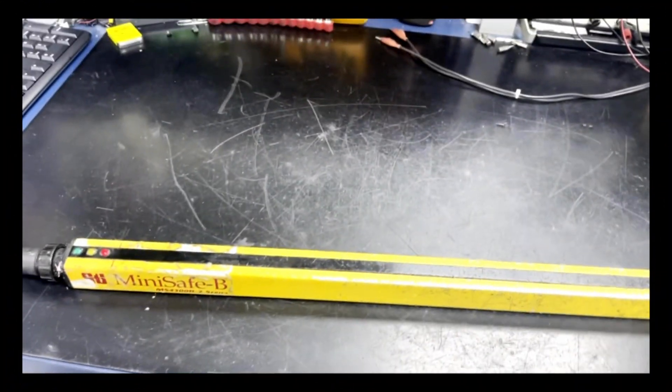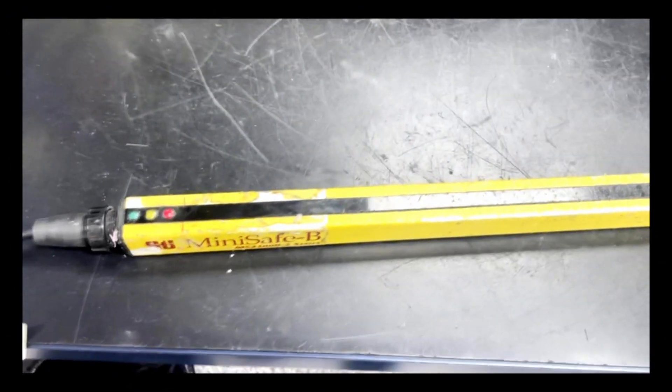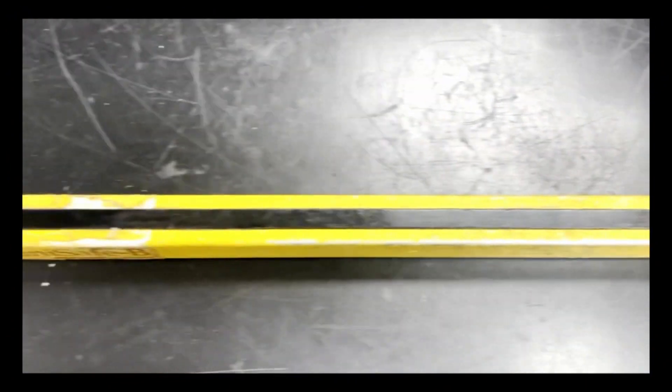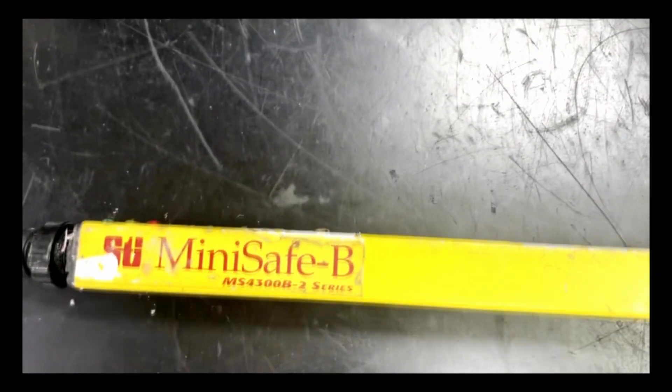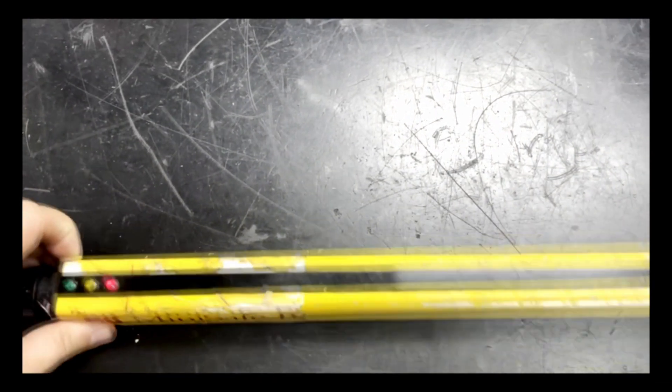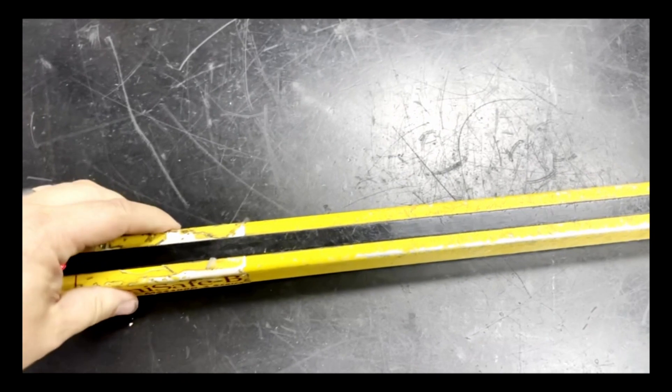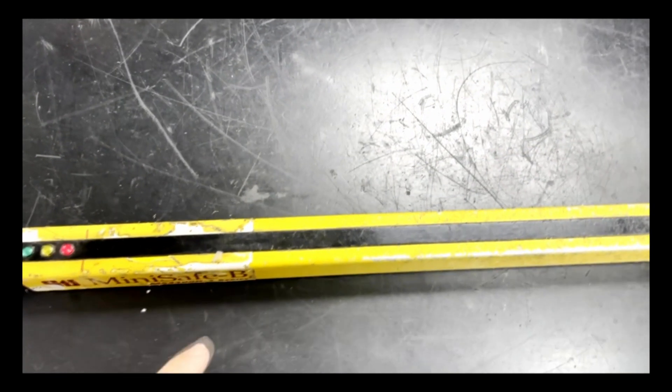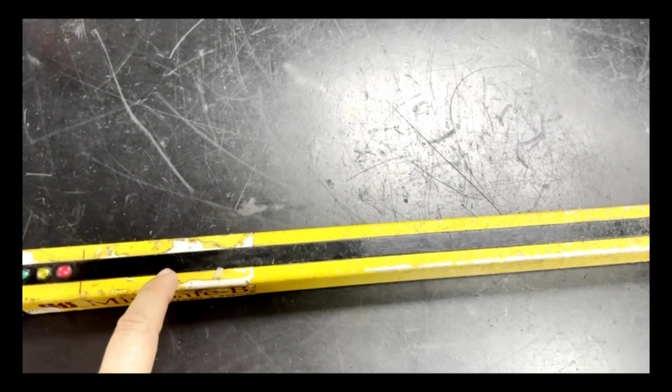Today we will talk about a test that we perform on our Safety Light Curtain Equipment. This is an STI MiniSafe-B scanner and one of the tests we want to perform is to see if the infrared LEDs inside are functioning.